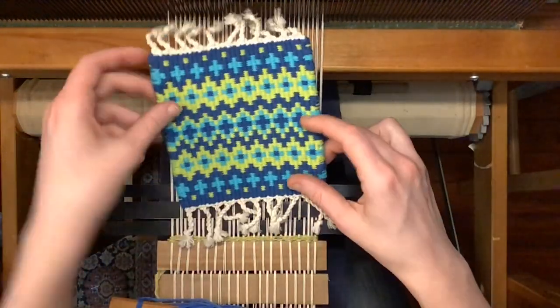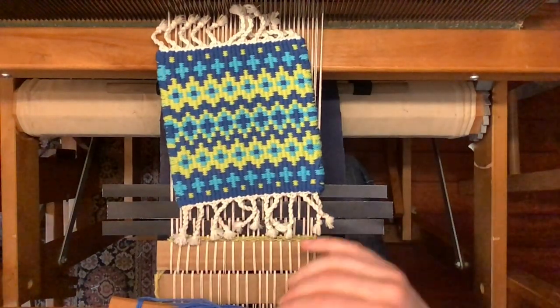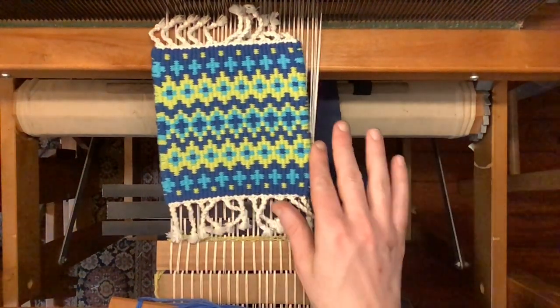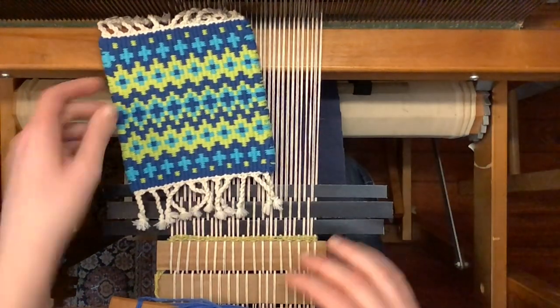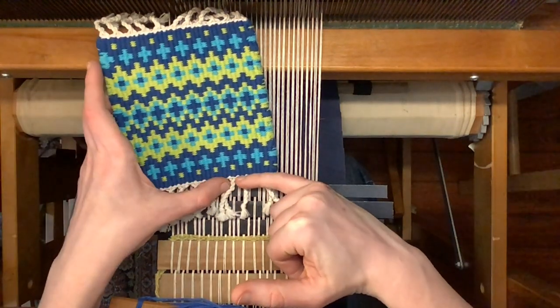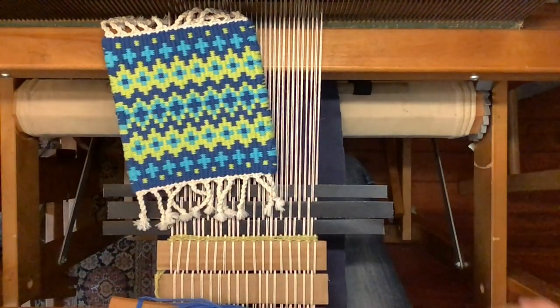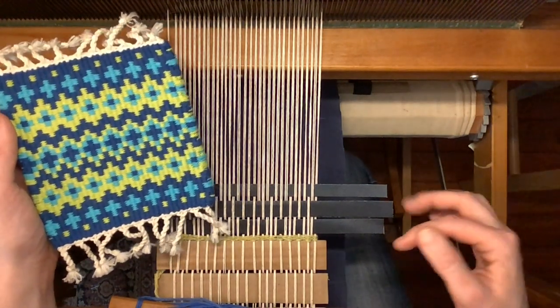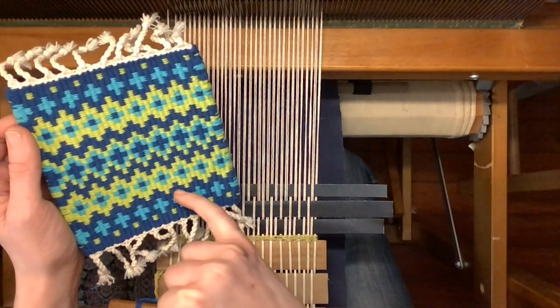Again, just like last time, our pattern consists of visual blocks of color. So each time I cycle through these three sheds I'll have one arrangement of colors that I'll repeat three times in a row to build up a visual pattern block, and then I can switch my order of colors around to get a new sequence to weave the next pattern block, and so on.